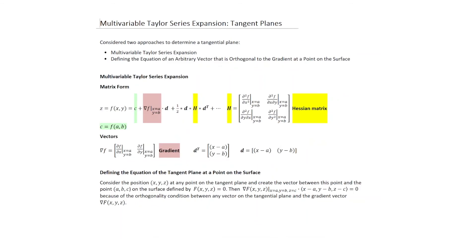We then looked at tangent planes, extended to physical problems where we did not necessarily call them tangent planes, but mathematically that is what they were. Two approaches were used: a multivariable Taylor series expansion, and defining the equation of an arbitrary vector orthogonal to the gradient at a point on the surface.